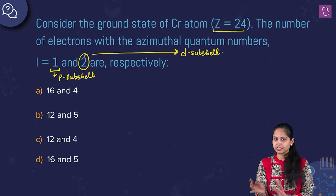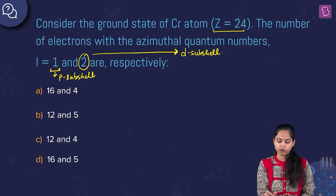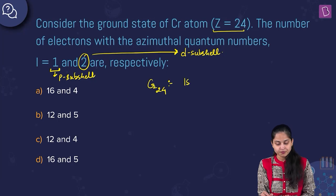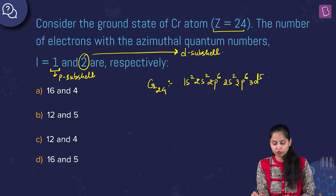If I write the electronic configuration for chromium with atomic number 24, it is 1s², 2s², 2p⁶, 3s², 3p⁶, 3d⁵ and 4s¹.